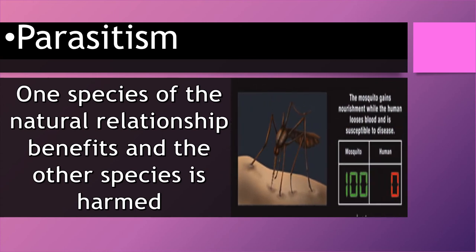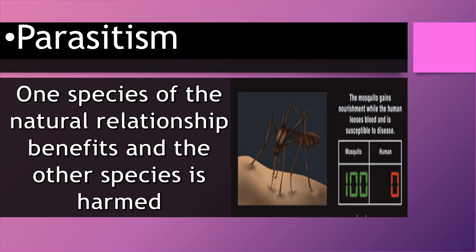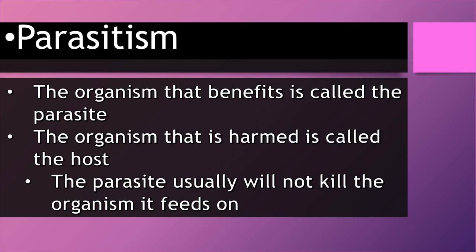Then we have something we're all too familiar with — mosquitoes. Mosquitoes gain nourishment while the human loses blood and is susceptible to different diseases and itchy bumps. The organism that benefits in parasitism is called the parasite; the organism that is harmed is called the host. Once again, the parasite usually will not kill the organism it feeds on.